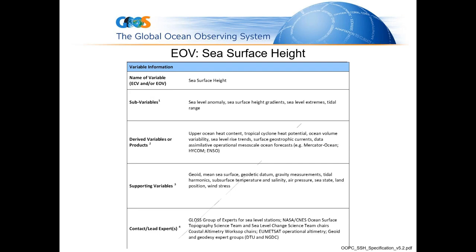They also give a contact for where more information can be obtained about that variable and where the observations can be downloaded. This kind of classification scheme that the Global Ocean Observing System applied to their essential ocean variables might actually be useful for us in geodesy when we define the essential geodetic variables.